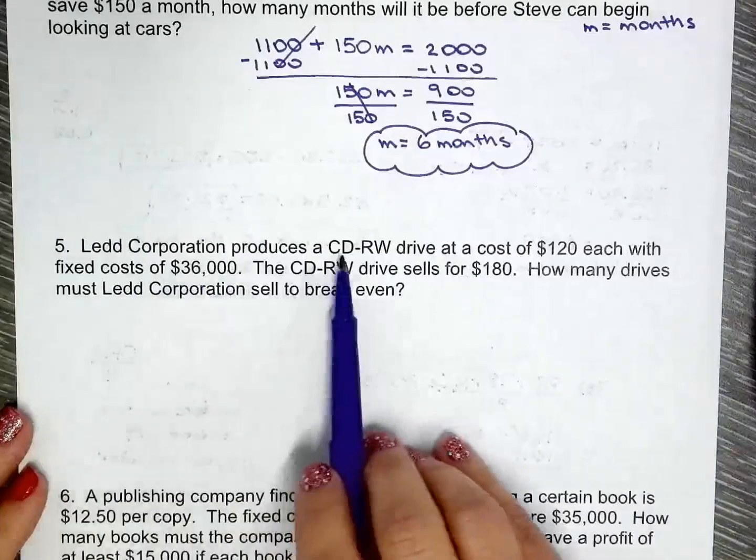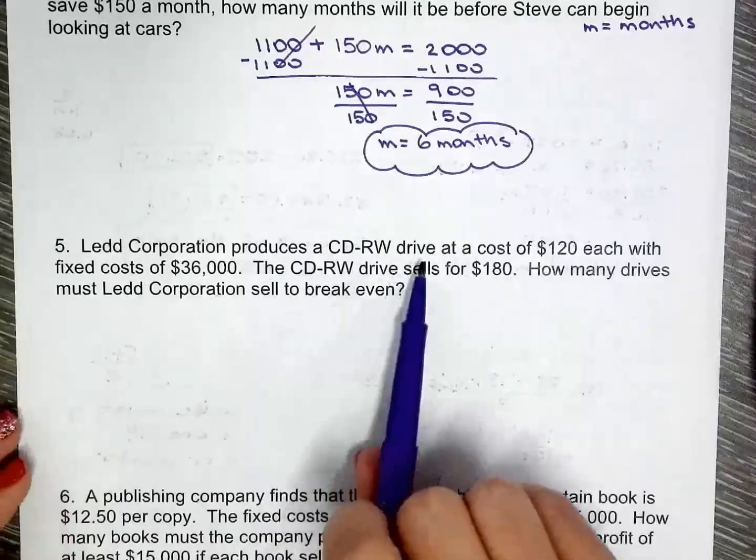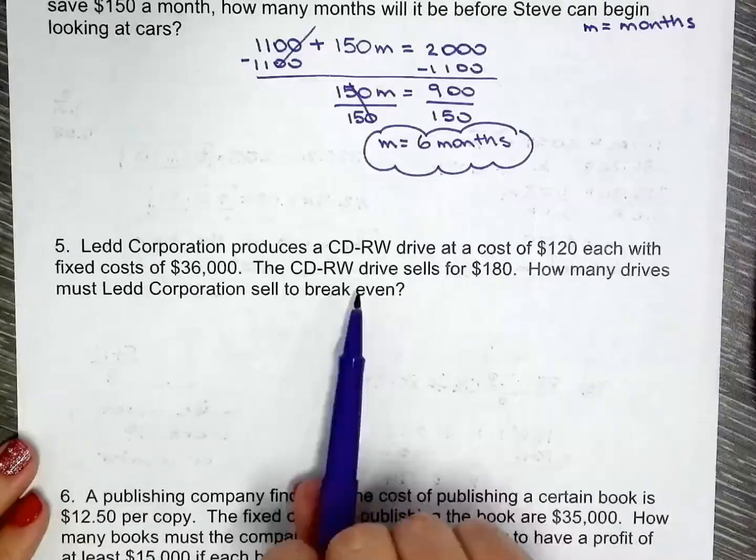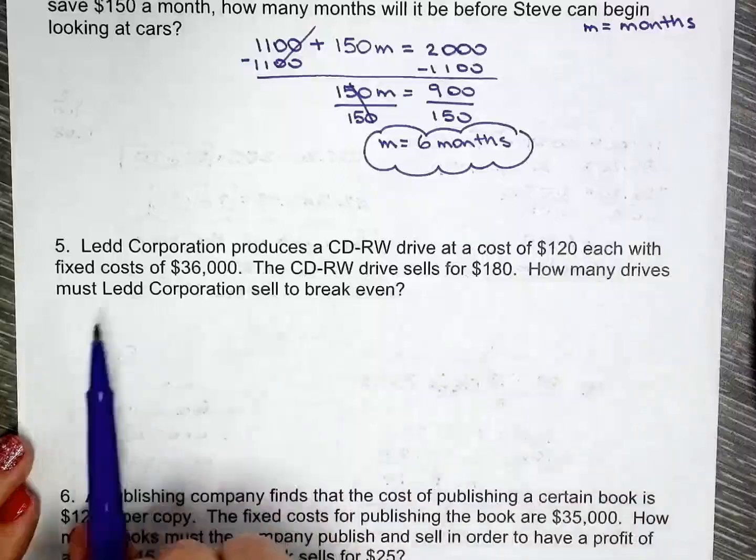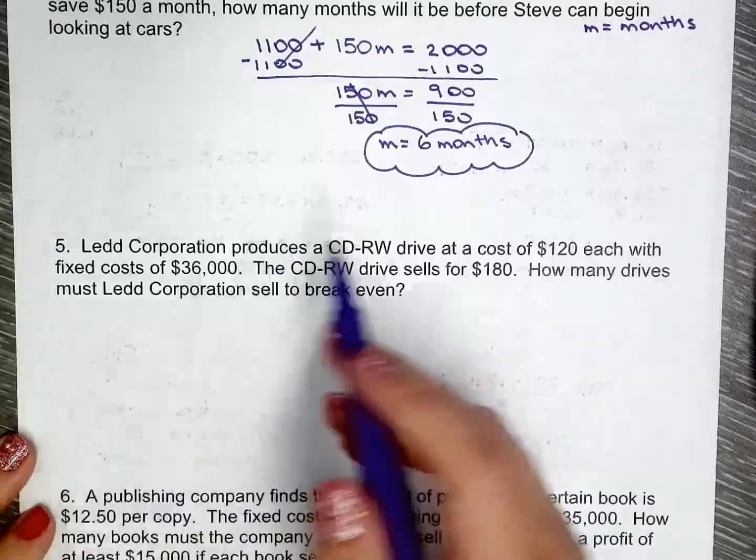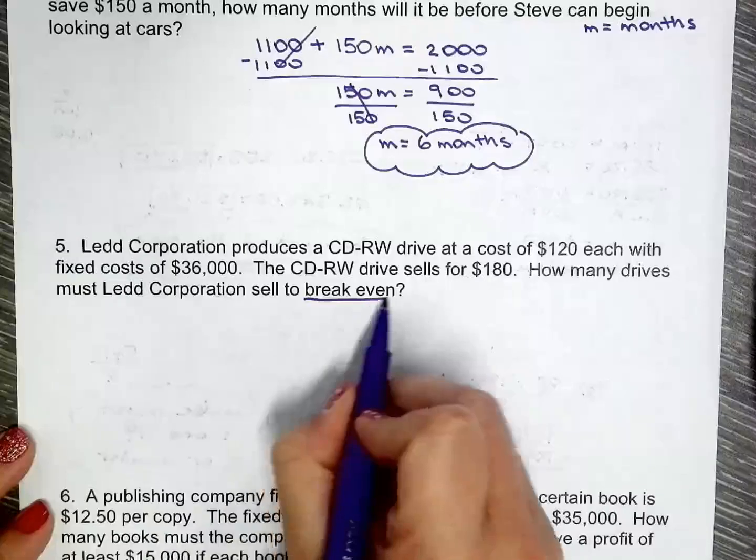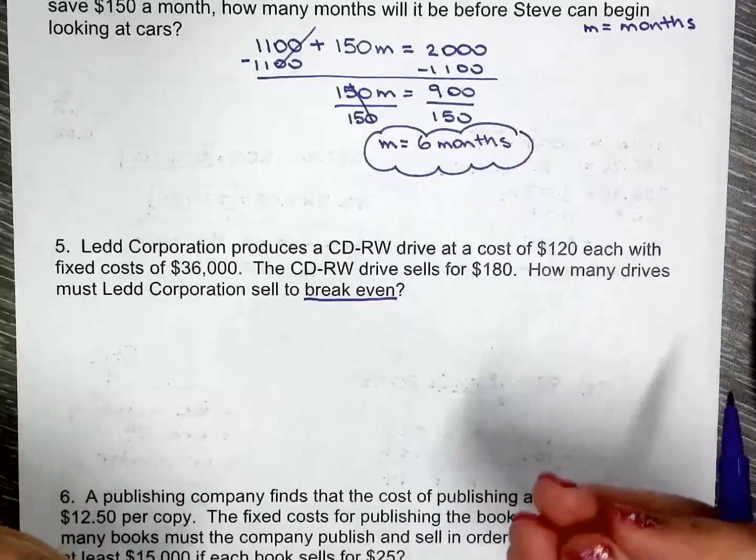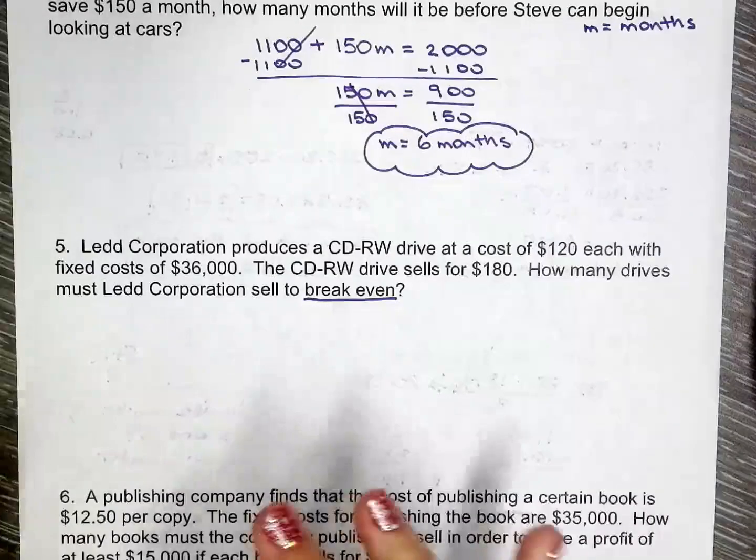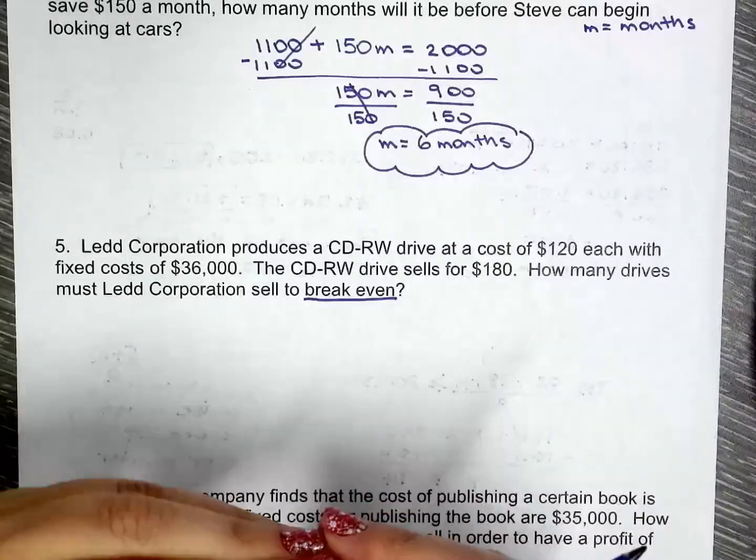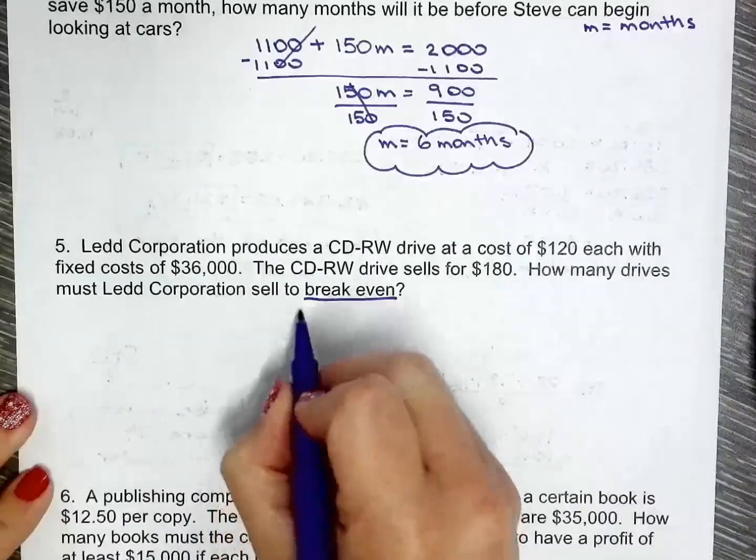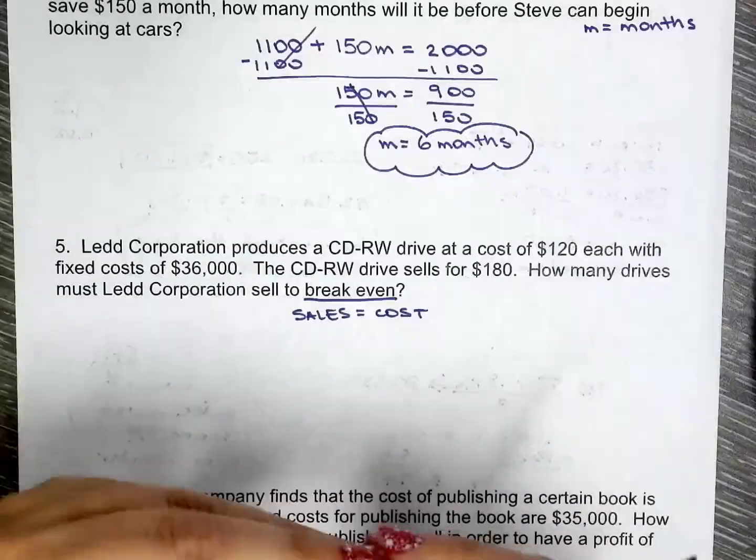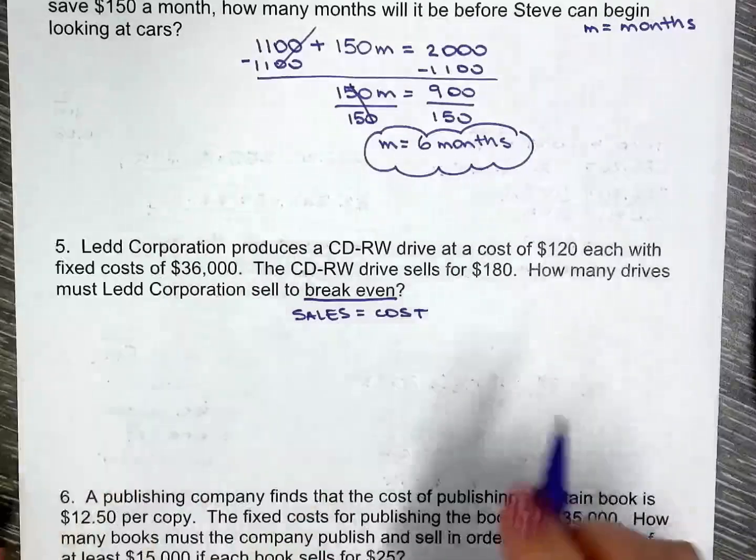Ledd Corporation produces a CD-ROM drive back in the day, at a cost of $120 each with fixed costs of $36,000. Each one sells for $180. How many drives do they need to sell in order to break even? What does break even mean? It means the company is not losing any money, but it's not making any money either. So that means the sales and the cost, they equal. The sales and the cost to produce this whole thing is the same, so they're not making any profit.